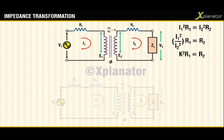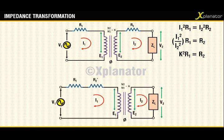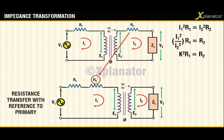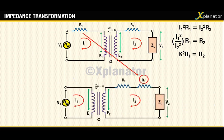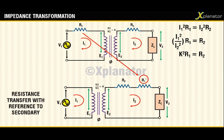So if you are taking a resistance from secondary to primary, then that resistance will be called r2 dash. We call this procedure resistance transfer with reference to primary, and the value of the resistance will be given as r2 divided by k². On the other hand, if you want to transfer a resistance from primary to secondary circuit, then the procedure is called resistance transfer with reference to secondary.